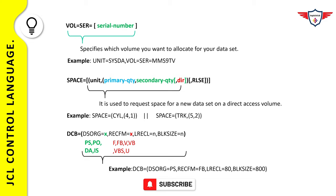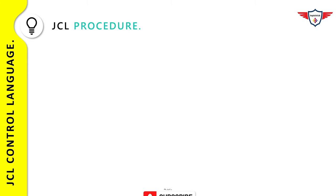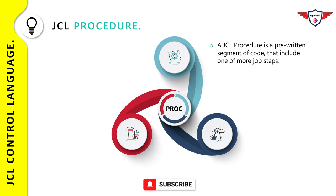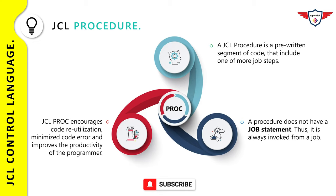Now let's devote some time to JCL procedures, or procs. In layman terms, a JCL procedure is a pre-written segment of code that includes one or more job steps. A JCL proc can be executed or invoked from a JCL — it cannot be executed on its own. By using procedures, the amount of JCL code you have to write is reduced, resulting in fewer coding errors and improved programmer productivity. JCL procs are divided into two categories: in-stream procedures and catalog procedures.